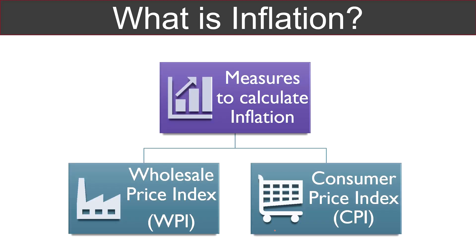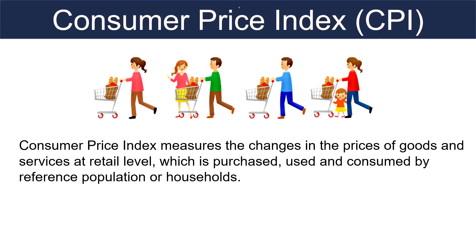There are two measures of calculating inflation: Wholesale Price Index and Consumer Price Index. Consumer Price Index measures the changes in the prices of goods and services at retail level which is purchased, used and consumed by the reference population or households. Consumer Price Index is also known as Cost of Living Index. It measures the average change in the retail prices of set of goods that are used by consumers on a regular basis.